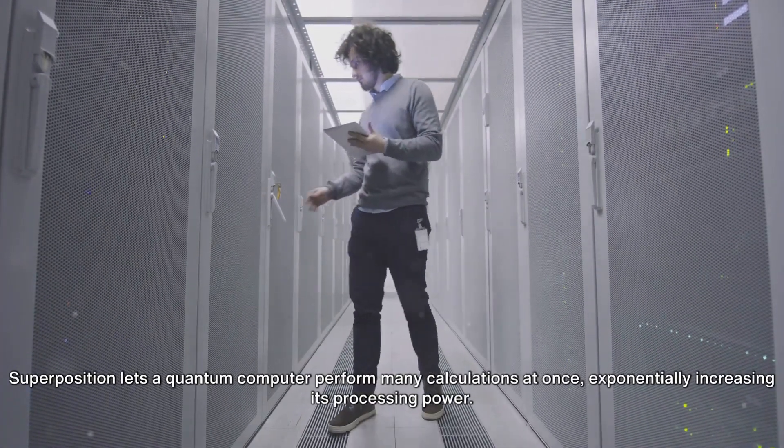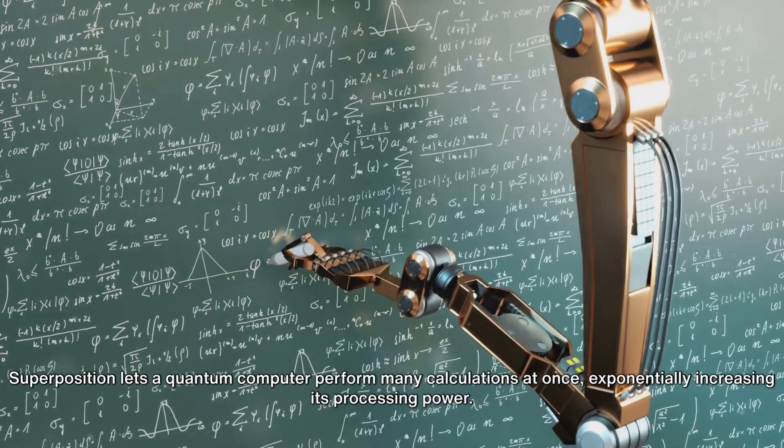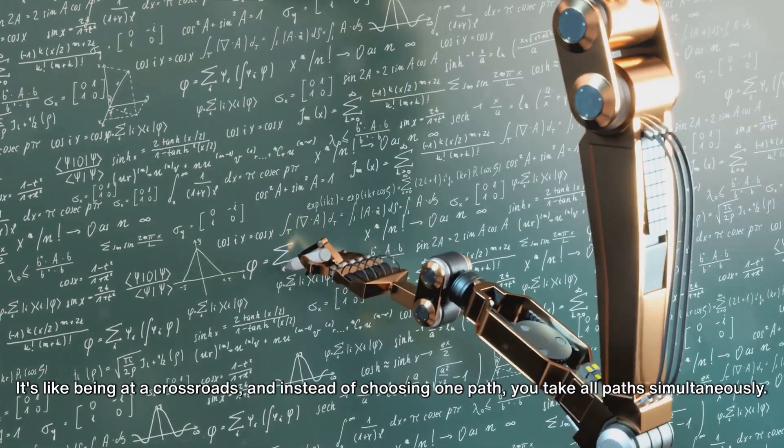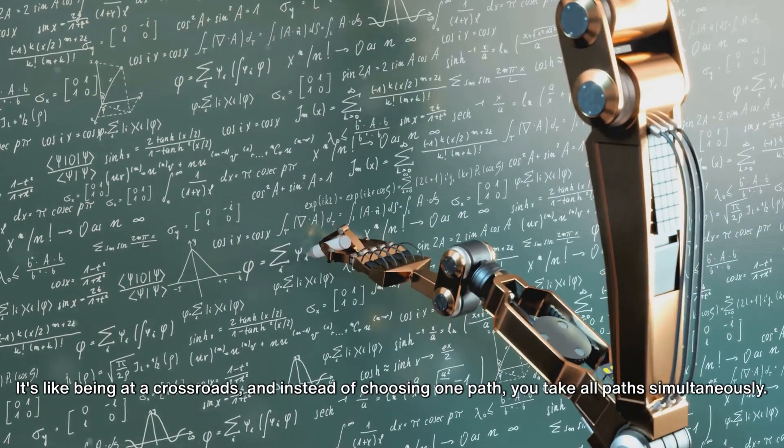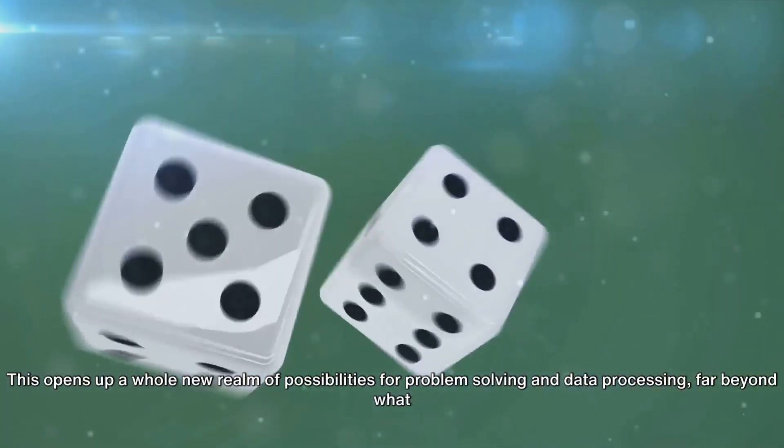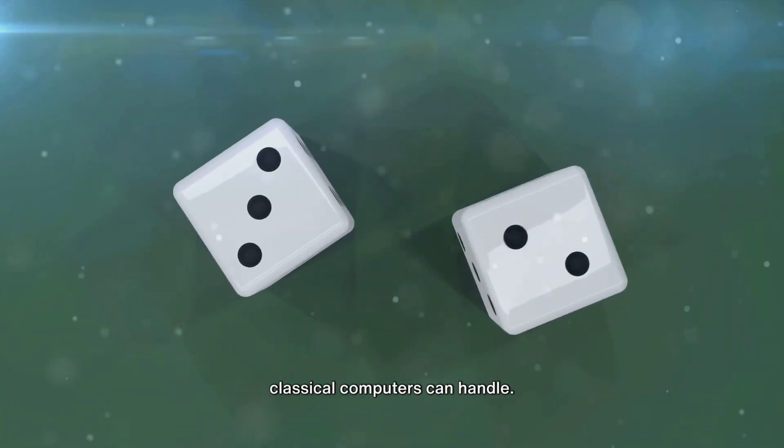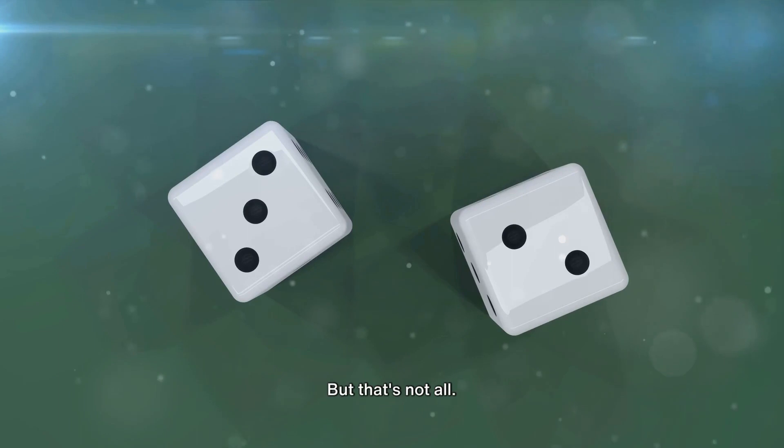Superposition lets a quantum computer perform many calculations at once, exponentially increasing its processing power. It's like being at a crossroads, and instead of choosing one path, you take all paths simultaneously. This opens up a whole new realm of possibilities for problem solving and data processing, far beyond what classical computers can handle.